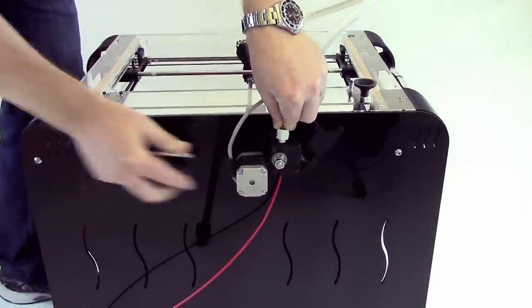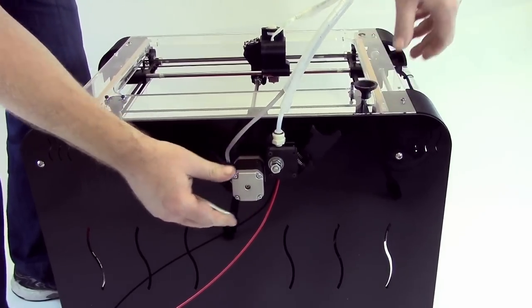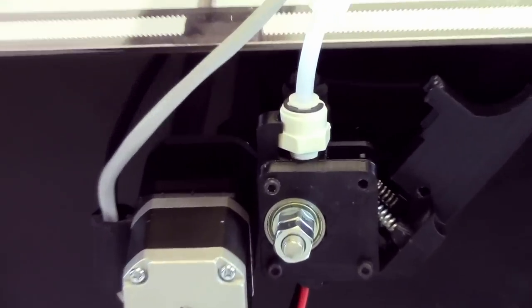The first thing we'll do is insert the rear of the tube into the extruder clamping assembly on the back of the machine. Make sure this fitting is snug and oriented properly.